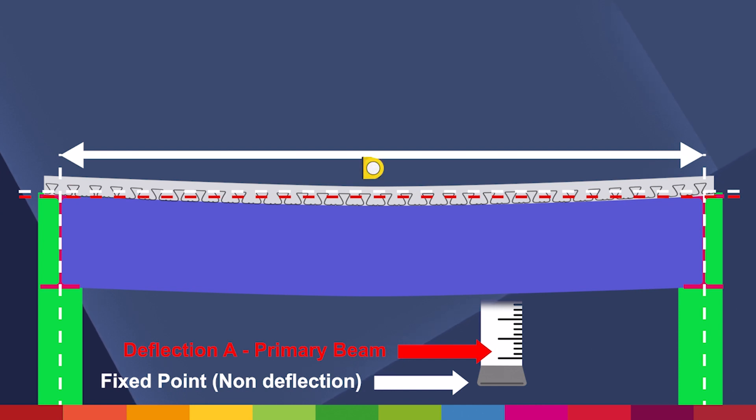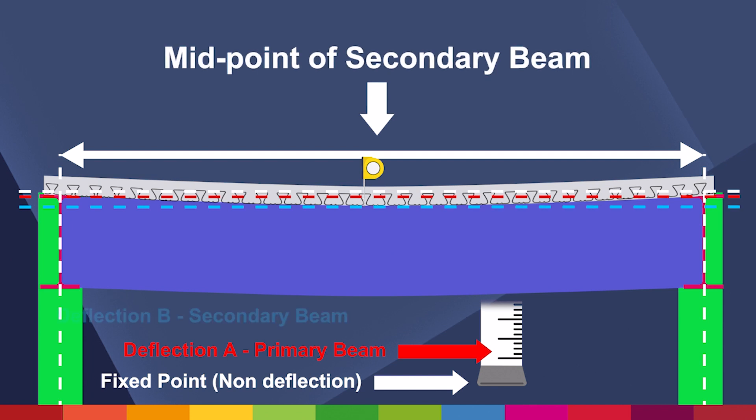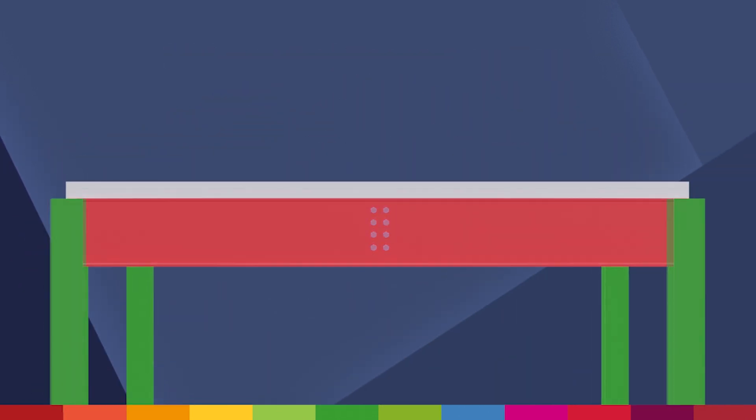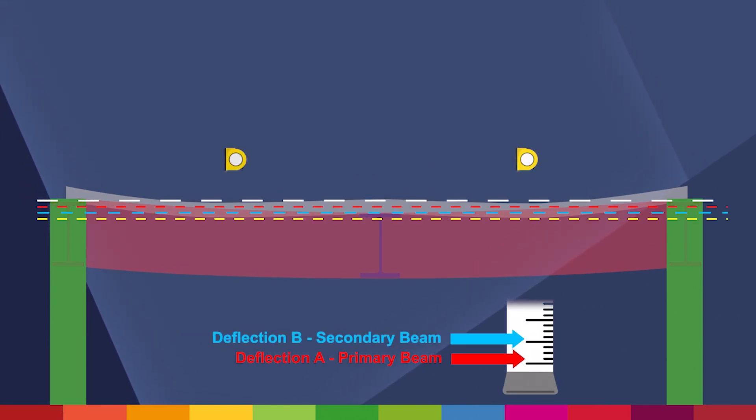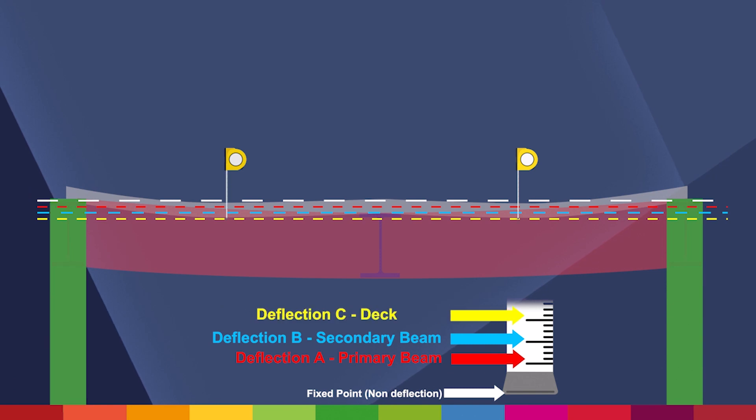We will call this point, the midpoint of the secondary beam, deflection B. The deck will then further deflect between the secondary beams. We'll call this deflection C.